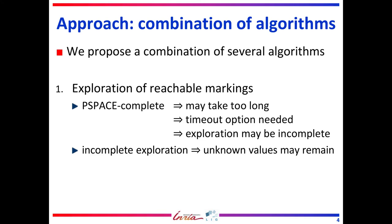The approach we propose is a combination of various algorithms. The first one does an exploration of reachable markings. Since this exploration is PSPACE complete, it may take too long and be halted by a timeout. So the exploration is either complete or incomplete. If it is incomplete, some dead places, dead transitions, or concurrent places may be left unknown. The next algorithms are only applied if the exploration is incomplete, and we try to remove as many unknown values as possible.